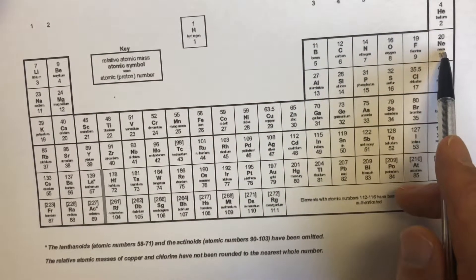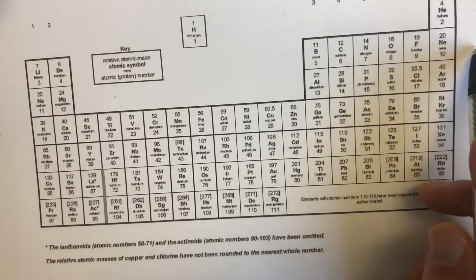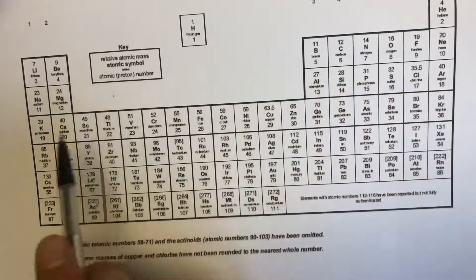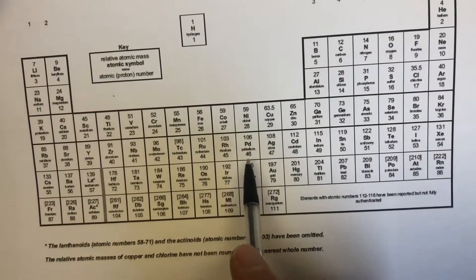We get to the end of this row, we call the rows periods, and we go to the next period down on the left hand side and it reads across like this. This is how we know every element in the periodic table has been discovered.